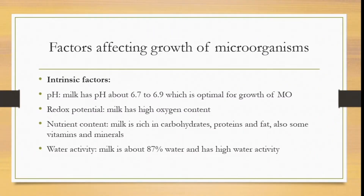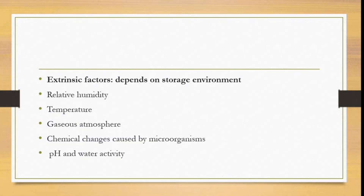Now we'll be looking at the factors that affect or influence the microorganisms present in milk. Intrinsic factors: pH — milk has a pH of about 6.7 to 6.9, which is optimal for growth of microorganisms. Redox potential — milk has high oxygen content. Nutrient content — milk is rich in carbohydrates, proteins, and fat, as well as vitamins and minerals. Water activity — milk is about 87% water and has a high water activity.